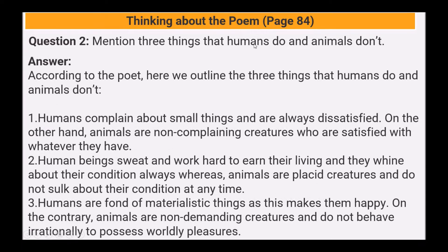Next: mention three things that humans do and animals don't, according to the poet. Here we outline the three things. Humans complain about small things and are always dissatisfied. On the other hand, animals are non-complaining creatures who are satisfied with whatever they have. Human beings work hard to earn their living.